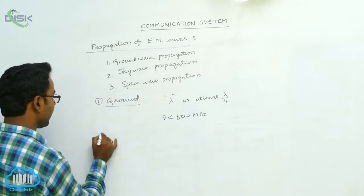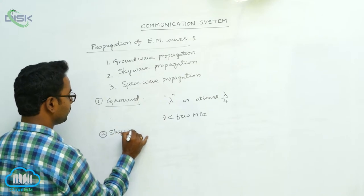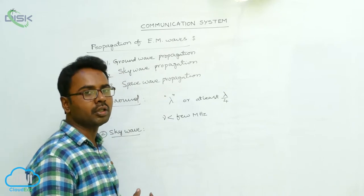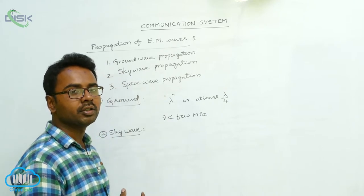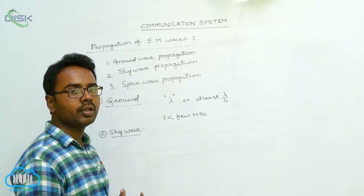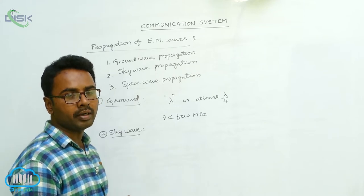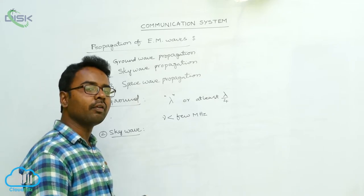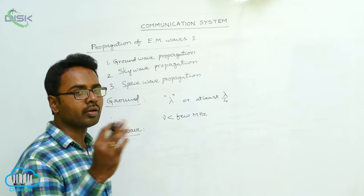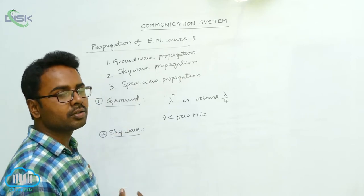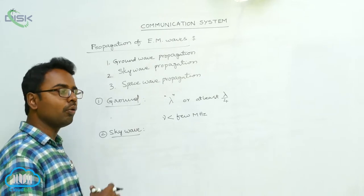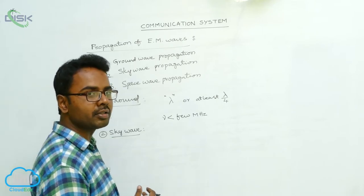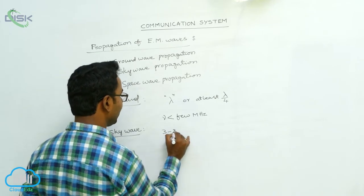Next we look at sky wave propagation and how it achieves long-distance communication. In sky wave propagation, long-distance communication is achieved by the reflection of signals by the ionospheric layer present in the atmosphere. When signals are reflected back to the earth from the ionosphere, sky wave propagation is achieved over a long distance. This propagation is suitable for signals with frequencies from 3 to 30 megahertz.